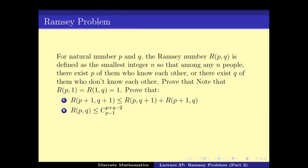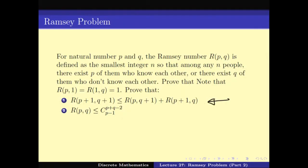what does the Ramsey problem say? Given two natural numbers P and Q, we define the Ramsey number R(P,Q) as the smallest integer N such that among N people there exist either P of them who know each other or Q of them who don't know each other. The idea is to prove that R(P+1, Q+1) is less than R(P,Q+1) plus R(P+1,Q), and using this recurrence to prove that R(P,Q) is less than or equal to (P+Q-2) choose (P-1).